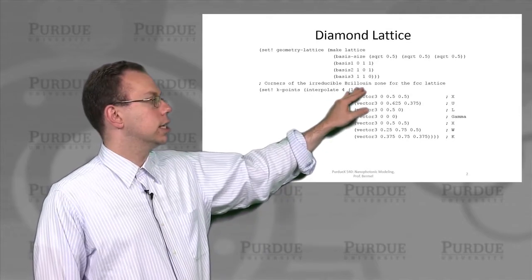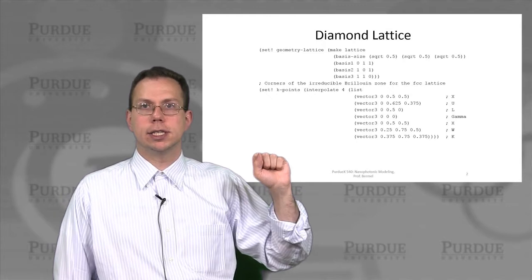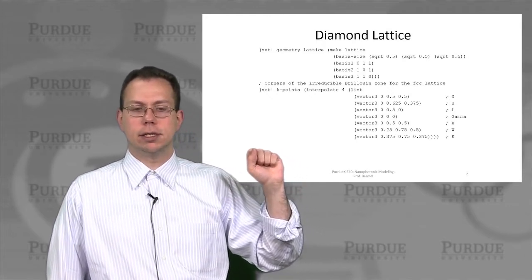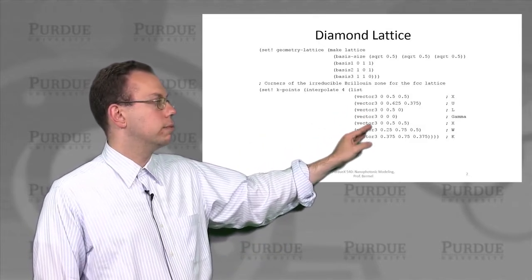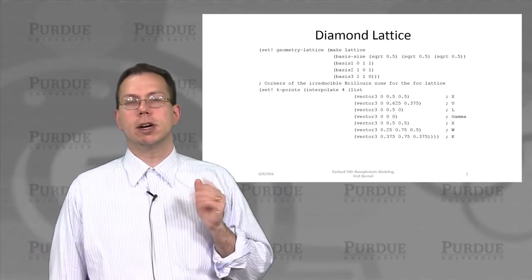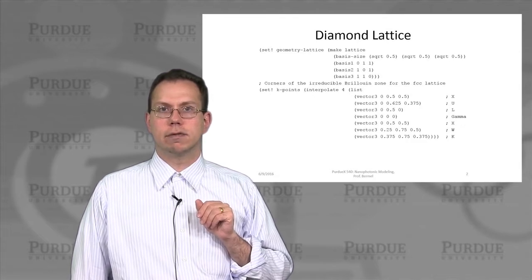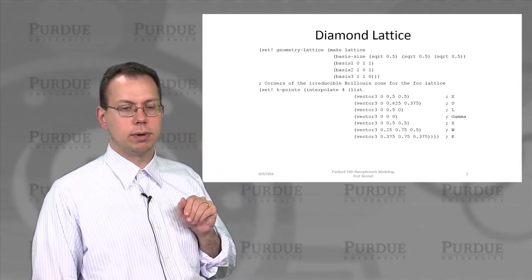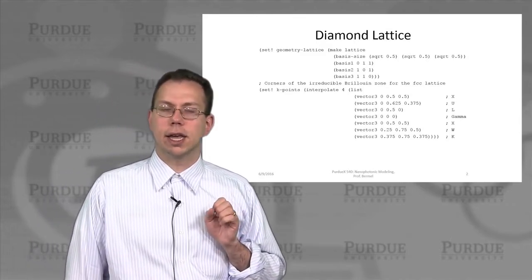But then second, you can see that the basis directions are essentially like y plus z, and then x plus z, and then x plus y. And then we actually come up with a fairly complex looking list of special k points. But these can be also looked up in the literature for the face center cubic lattice. And so it's not just the gamma point, but also the x, u, l, w, and k points.